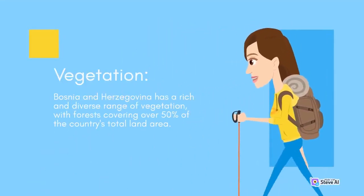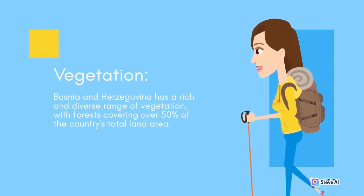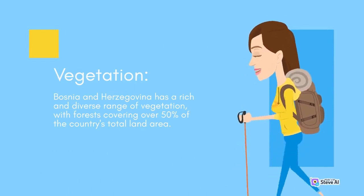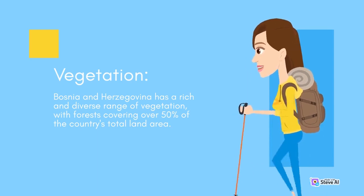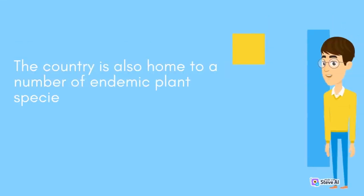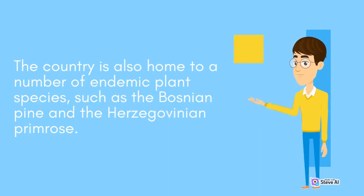Bosnia and Herzegovina has a rich and diverse range of vegetation, with forests covering over 50% of the country's total land area. The country is known for its dense forests of beech, oak, and fir, as well as its lush meadows and grasslands. The country is also home to a number of endemic plant species, such as the Bosnian pine and the Herzegovina primrose.